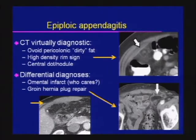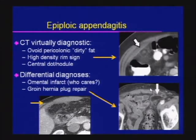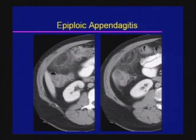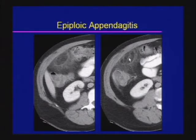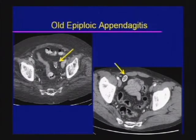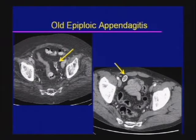Here is an example of an omental infarct, and in another case, this is actually a hernia plug done at the time of left inguinal hernia repair. Additional cases show the same findings: hyperdense rim, fatty focus, pericolonic stranding, and a central dot sign. When epiploic appendagitis heals, it can scar down, become calcified, and leave just a small nub of soft tissue in the region of prior inflammation.